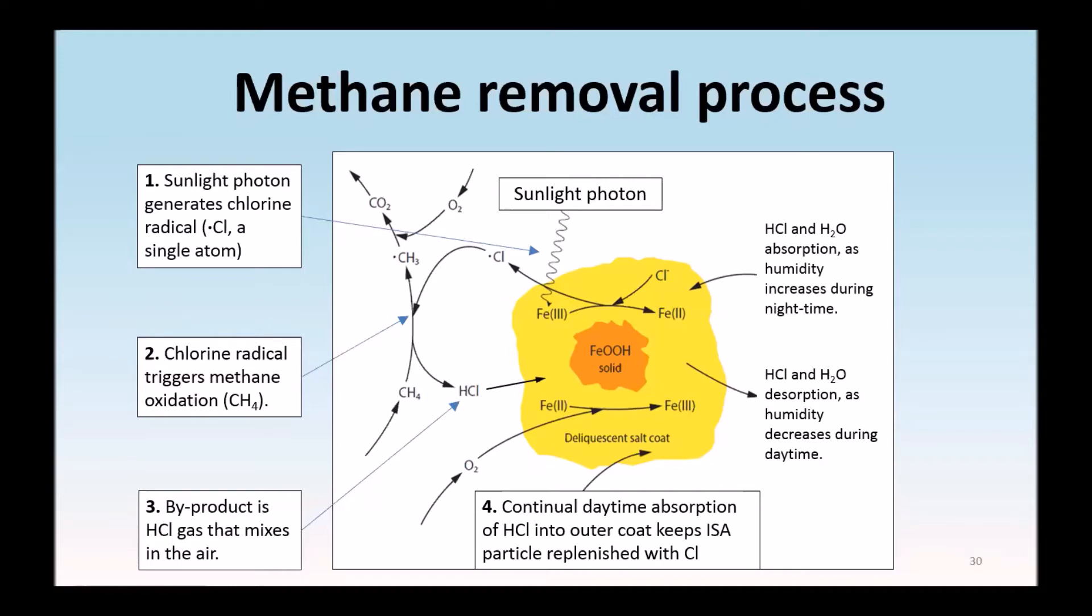In this case, a photon reduces iron 3 to iron 2 so it can only bond to two chlorine atoms. This releases the spare chlorine atom as seen here and we see it triggering the oxidation of a methane molecule described in box 2.